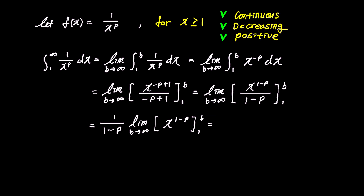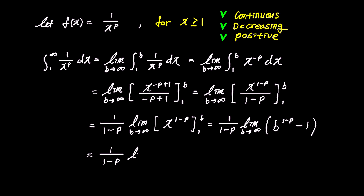Now, substituting b and 1 for x, we get 1 over 1 minus p times the limit of b to the power of 1 minus p minus 1. This expression seems challenging to find the convergence condition with, so let's express b to the power of 1 minus p as the reciprocal 1 over b to the power of p minus 1, making the expression 1 over 1 minus p times the limit of 1 over b to the power of p minus 1, minus 1.